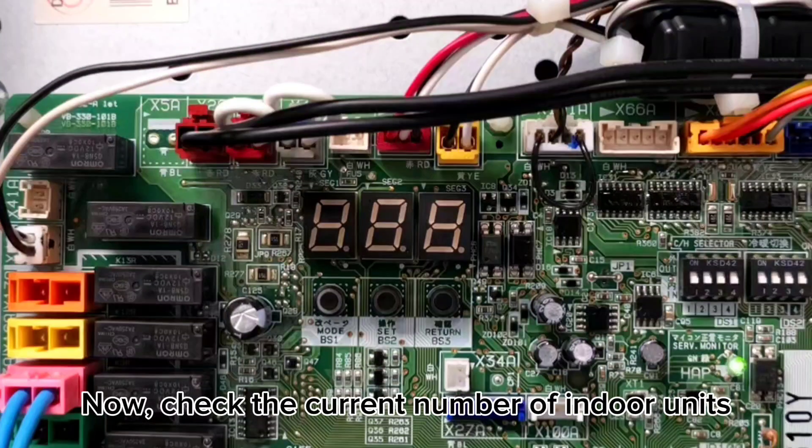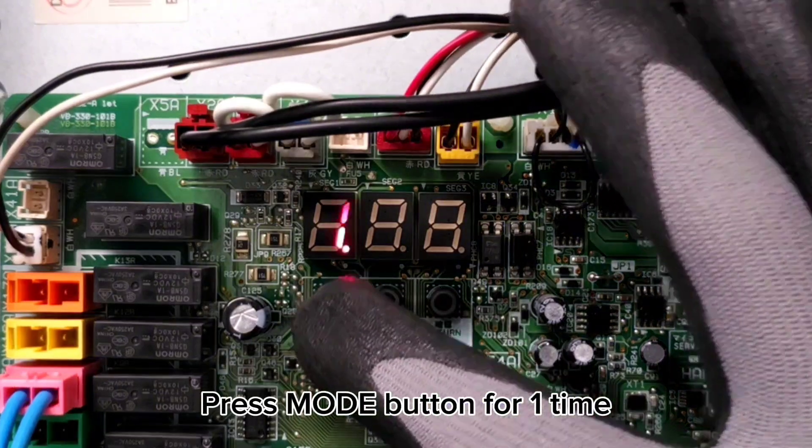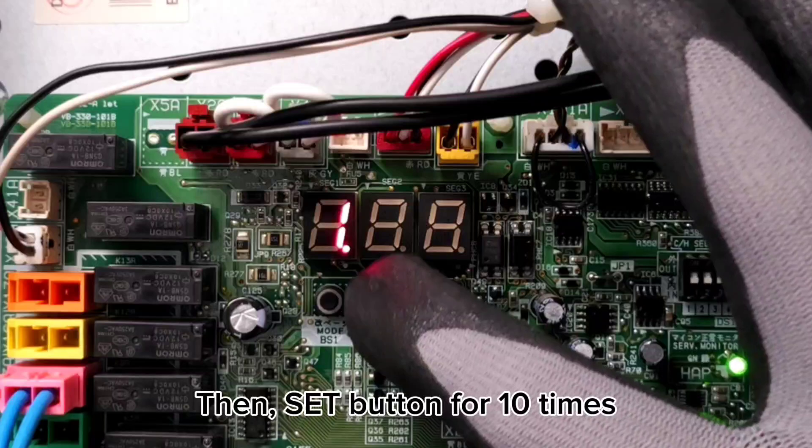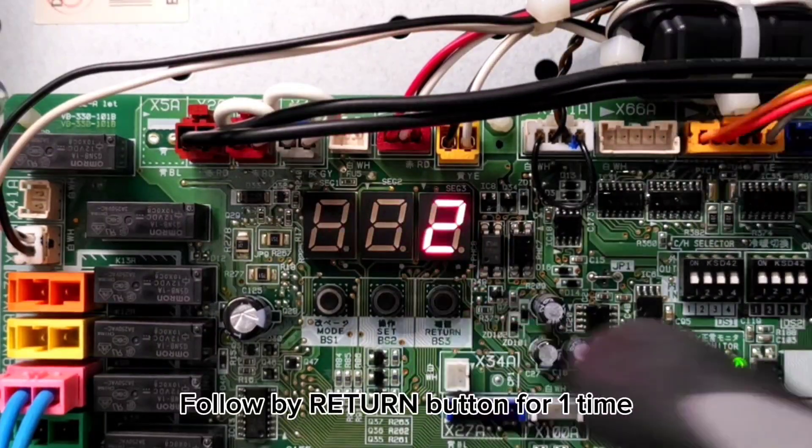Now, check the current number of indoor units. Press Mode button one time. Then, Set button 10 times. Followed by Return button one time.